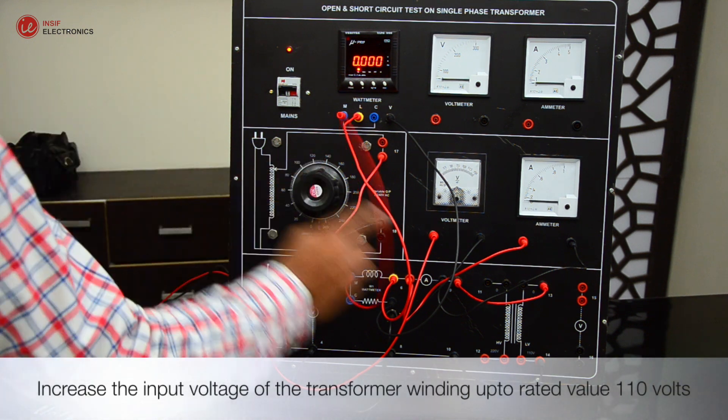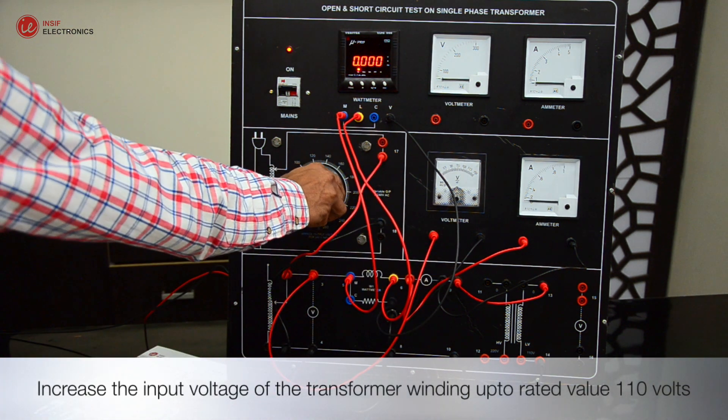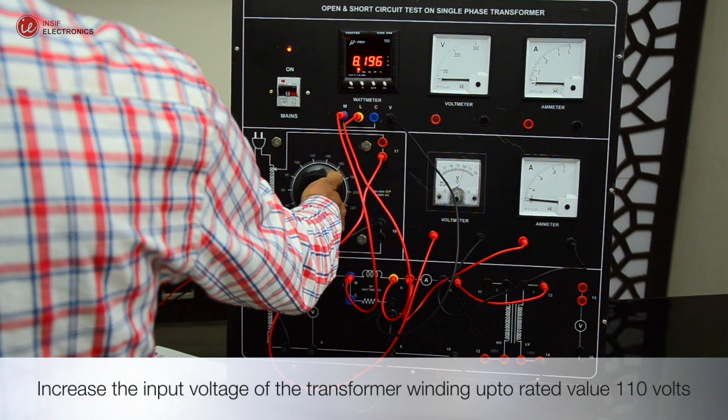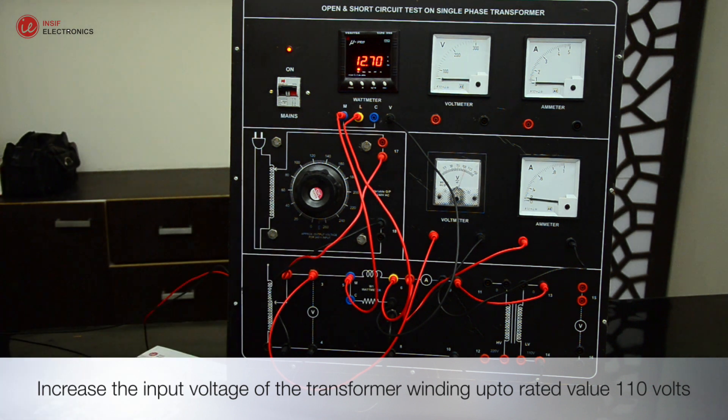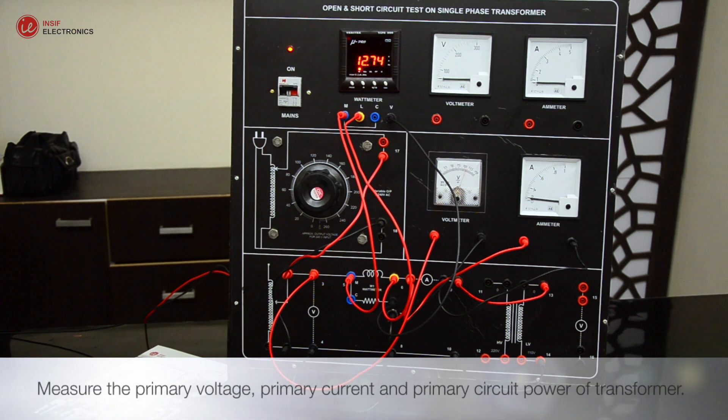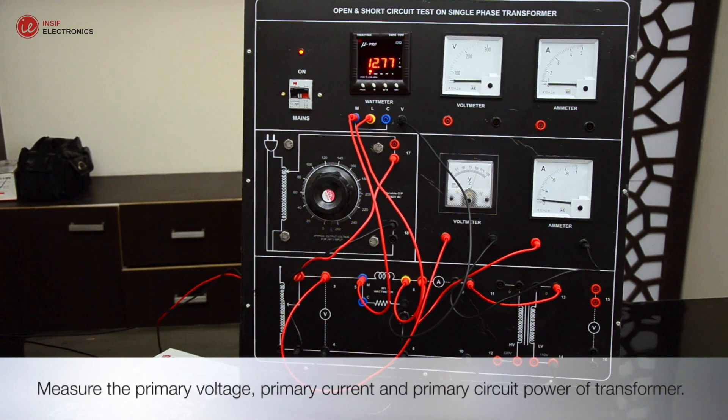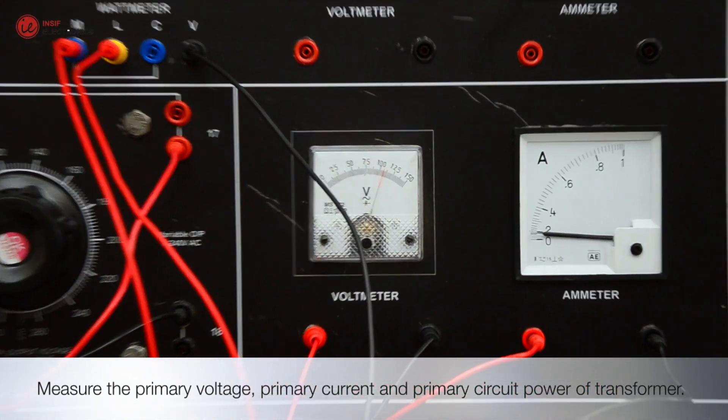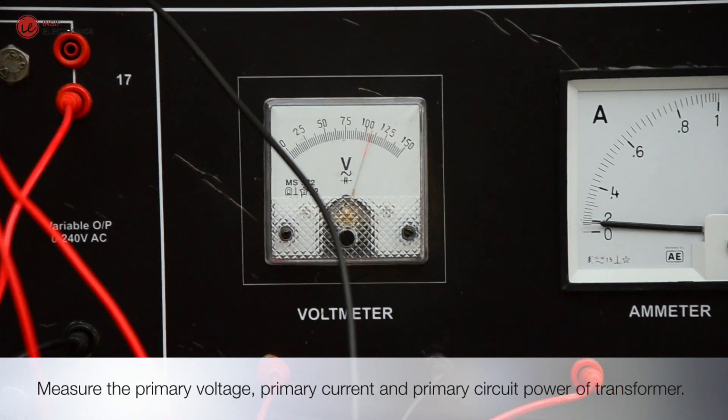Increase the input voltage of the transformer winding up to rated value 110 V. Increase the input voltage, primary current, and primary circuit power of transformer.